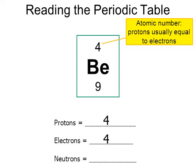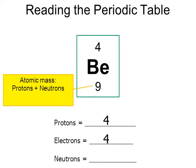What about the nine on the bottom? That is the atomic mass. By definition, that is the number of protons plus neutrons. In this case, protons plus neutrons equals nine. So I know there are four protons — four plus how many neutrons equals nine? Four plus what number equals nine? The answer is five. So that's how you can figure out protons, electrons, and neutrons from the periodic table. Let's try one more.